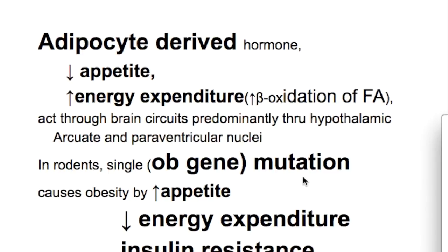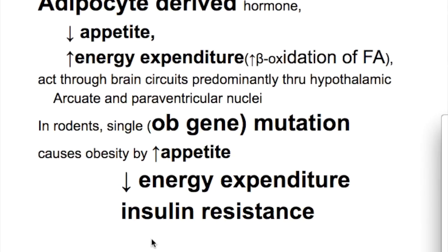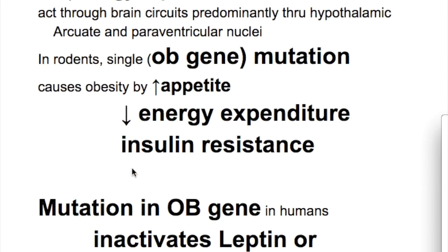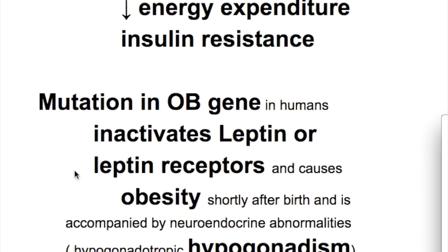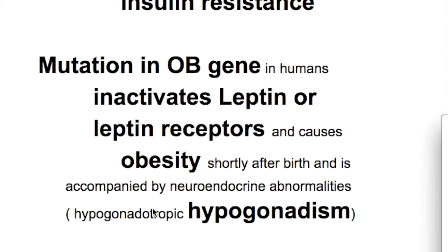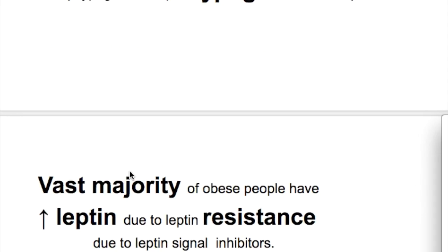In rodents, a single OB gene mutation causes obesity by increasing appetite and decreasing energy expenditure, and also causes insulin resistance. In humans, mutation in the OB gene inactivates leptin or leptin receptors and causes obesity shortly after birth, accompanied by neuroendocrine abnormalities like hypogonadotropic hypogonadism.